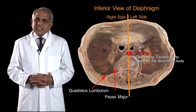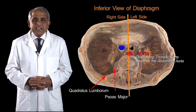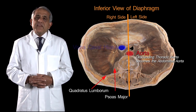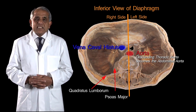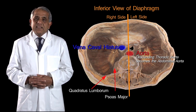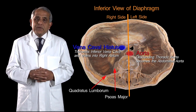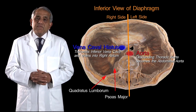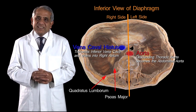Another large opening, slightly to the right of the midline and in the central tendon portion of the diaphragm, is called the vena caval hiatus, because this opening transmits the inferior vena cava. As soon as the inferior vena cava crosses this opening from below upwards, it drains into the floor of the right atrium within the fibrous pericardium.